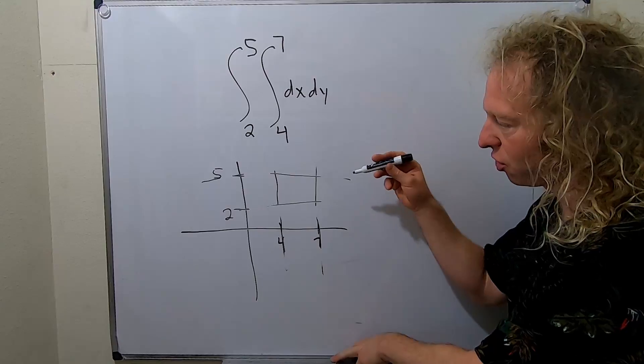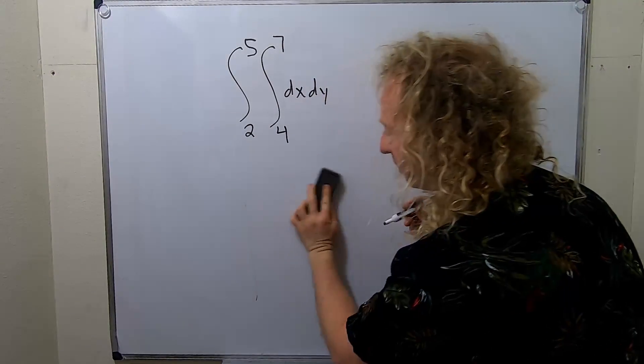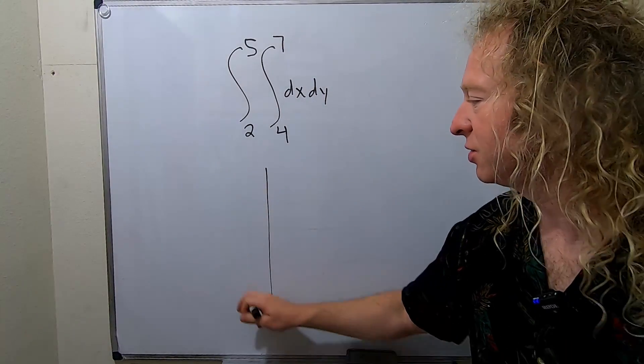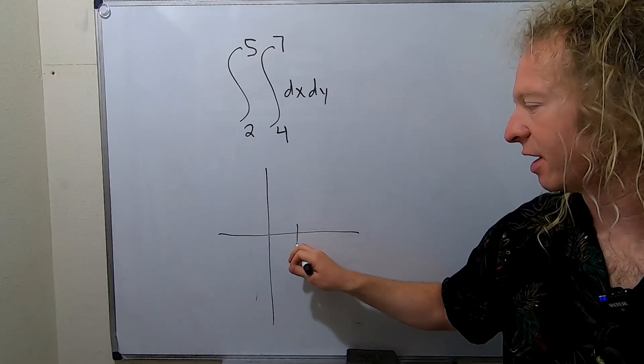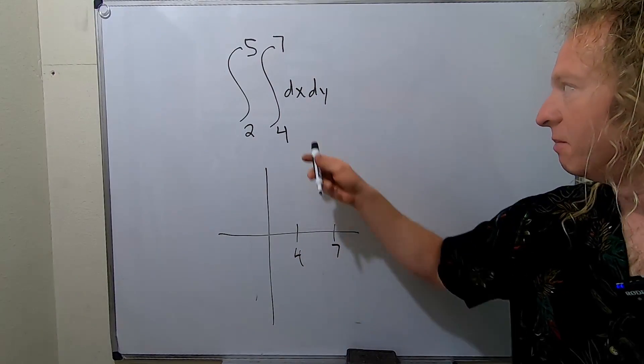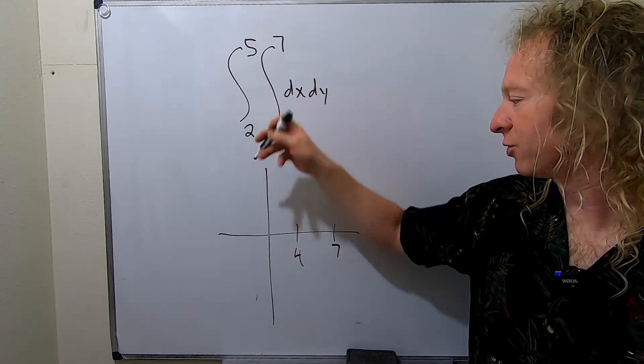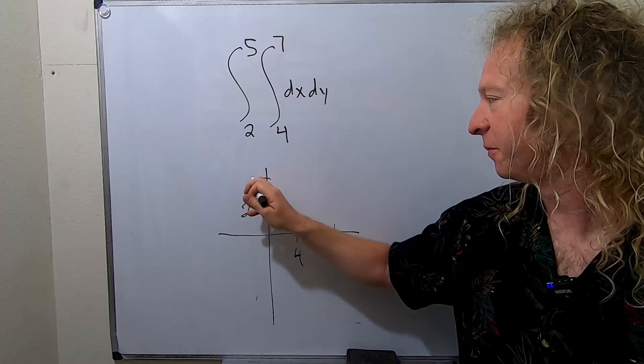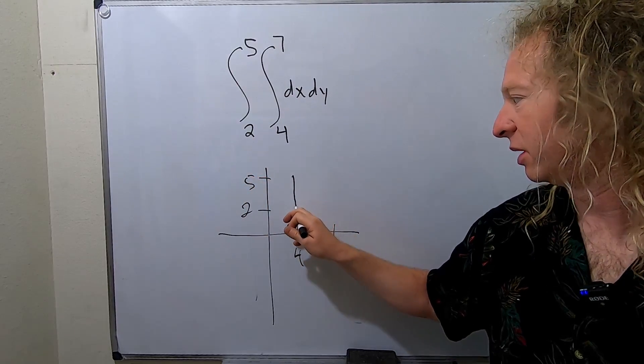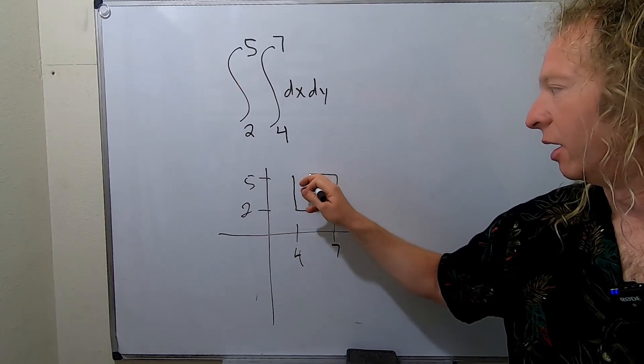Let me do it again without drawing the lines to make it a little bit prettier. So you draw the y-axis, you draw the x-axis. You go from 4 to 7 because x goes from 4 to 7. Then y goes from 2 to 5. So you just put a 2 and a 5 here and then you just draw a box. That's probably the better way to do it.